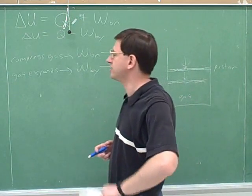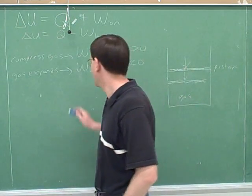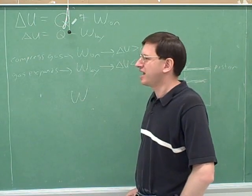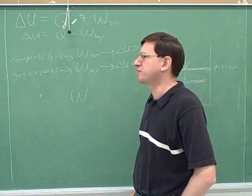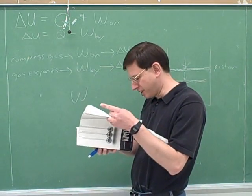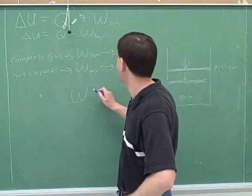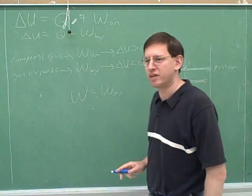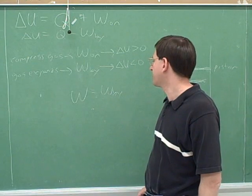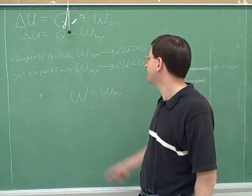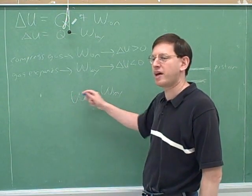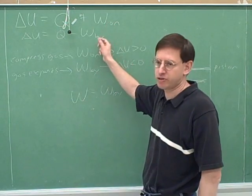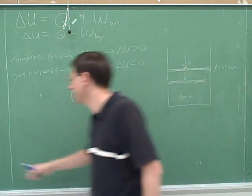One reason this is often not clear is that in your textbook, a lot of the time they'll just write W. They'll say at the beginning of the textbook what W means — for example, W is defined as W by, meaning the work done by the gas — but they don't keep reminding you of that. They just use W and expect you to remember it means W by. We'll be better off if we always write the subscript so we know whether it's work done on or by the gas.